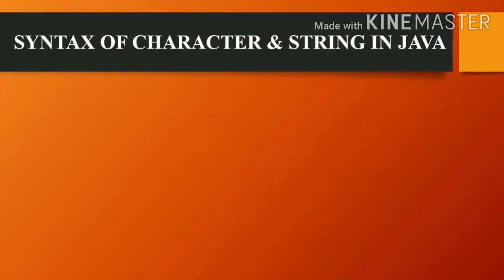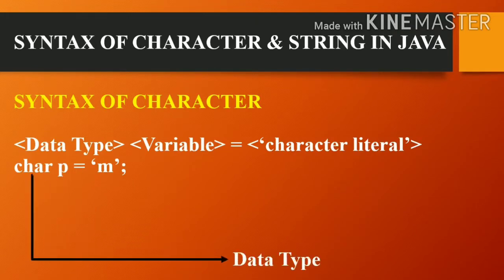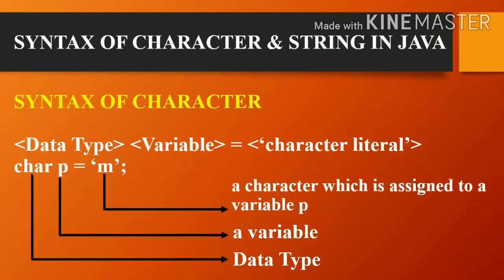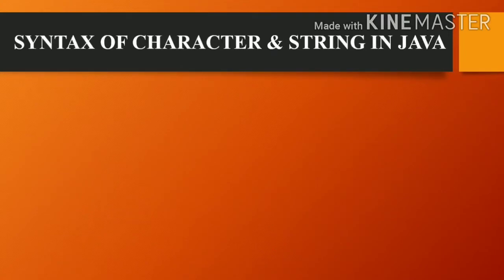In Java, the declaration of a character is explained as follows. The syntax is: data type, then variable, then equal, then the character literal. So 'char' is the data type, 'p' is the variable, and 'm' is the character assigned to variable p. It means that a character is always enclosed within single quotes.